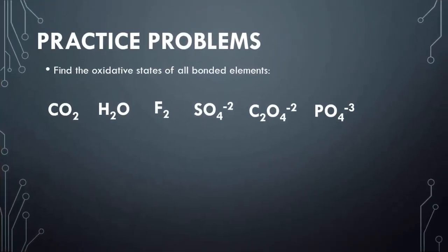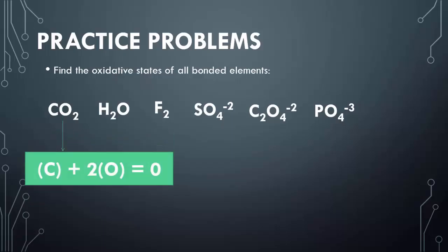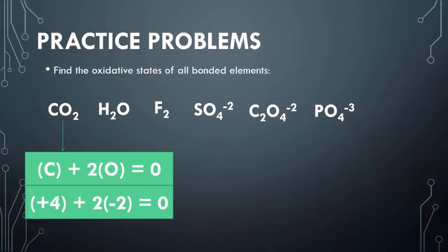Let's look at carbon dioxide. When you look at CO2, you notice you have one carbon mixed with two oxygens, and because it's a neutral compound, the charge equals zero. The charge of oxygen on the periodic table is negative two, so two times that is negative four. Therefore, carbon has to have a positive four charge to equal that overall zero neutral charge.